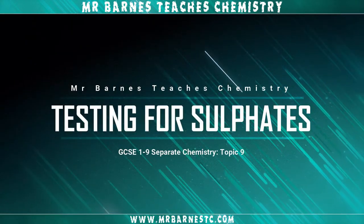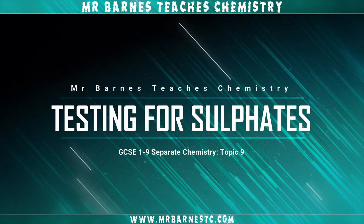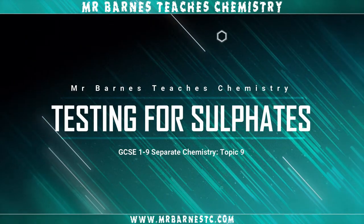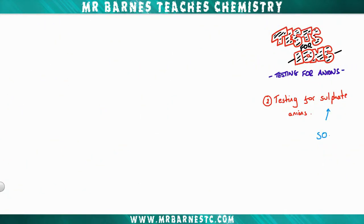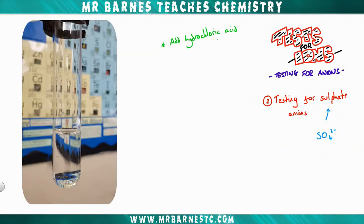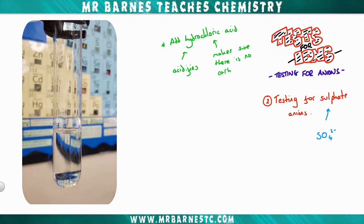If we move on to a sulfate ion, the first thing we want to do is add hydrochloric acid again. The reason we're doing that this time is because it acidifies it, helps the reaction to occur, and it also makes sure there are no carbonates present — we're not going to see any bubbling.